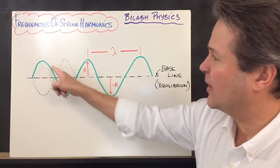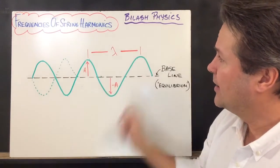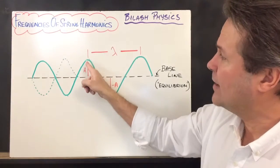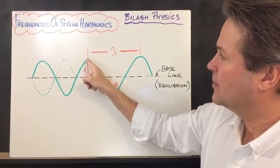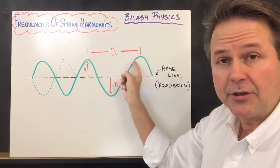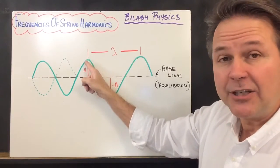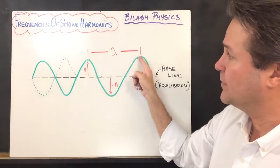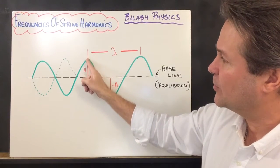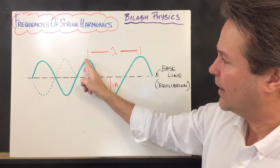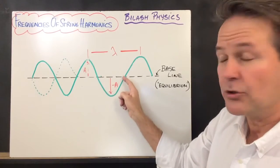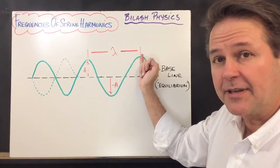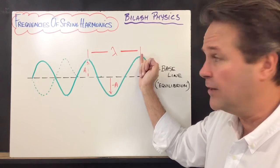Here is a sine wave drawn with the green line, and we actually have a couple of wavelengths. The wavelength is measured from peak to peak, or crest to crest, or antinode to antinode — that would be considered one complete wave. From this mark here, we have half of a crest, here we have an entire trough, and then here we have the second half of a crest, and that constitutes an entire wave.